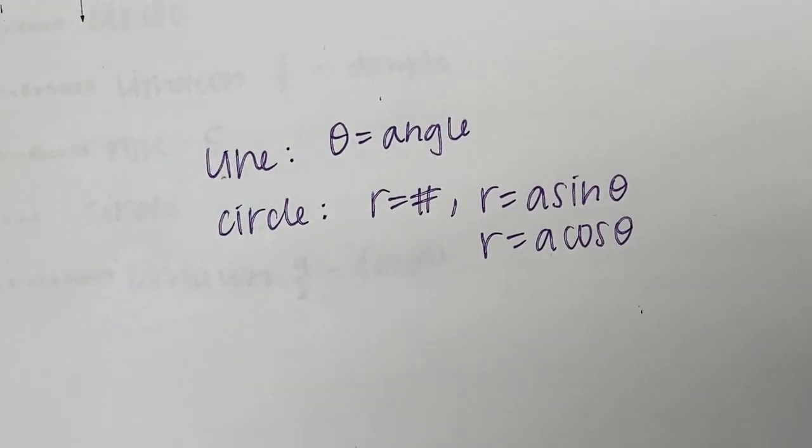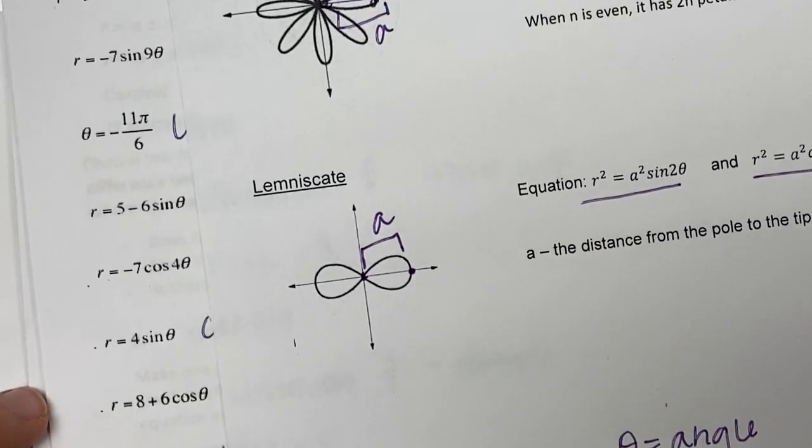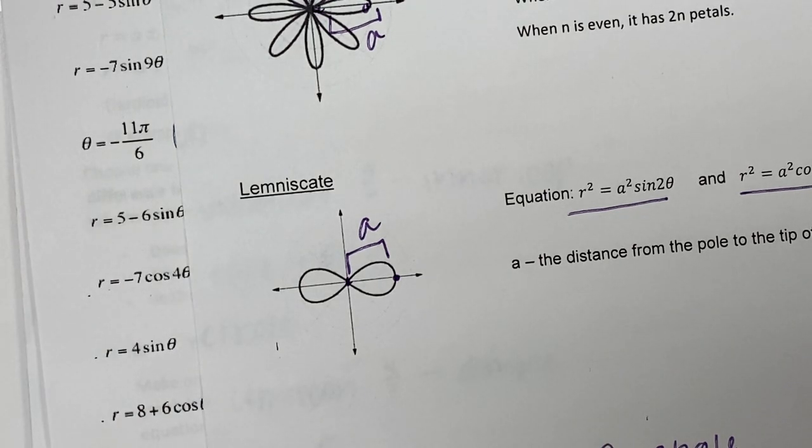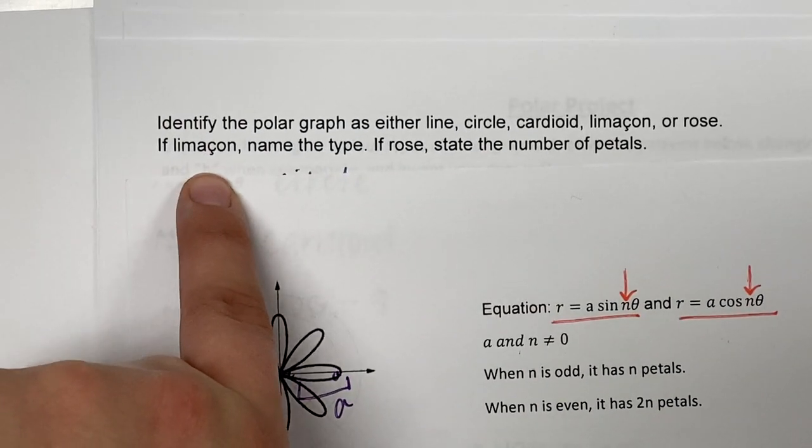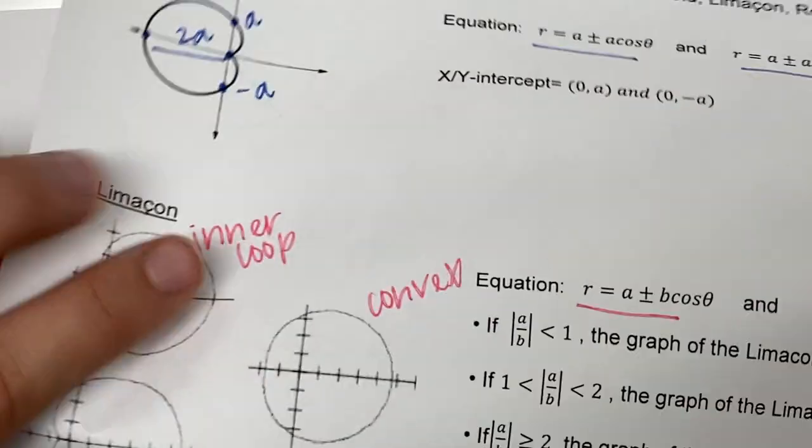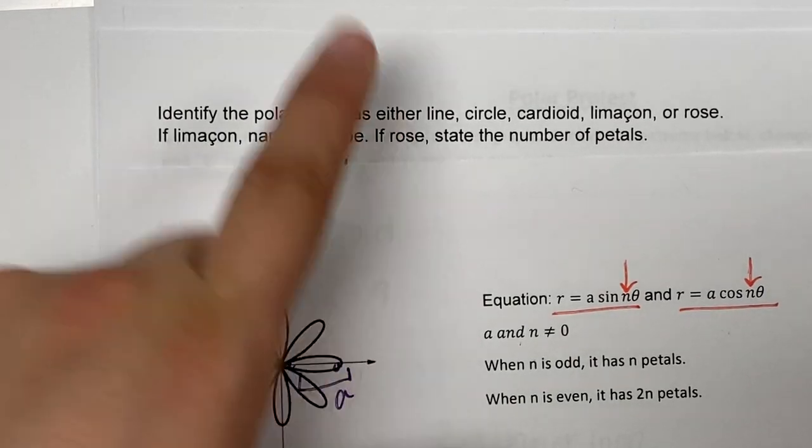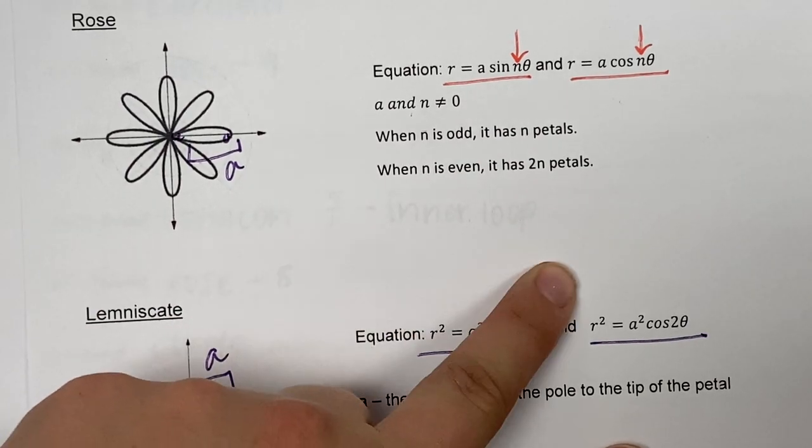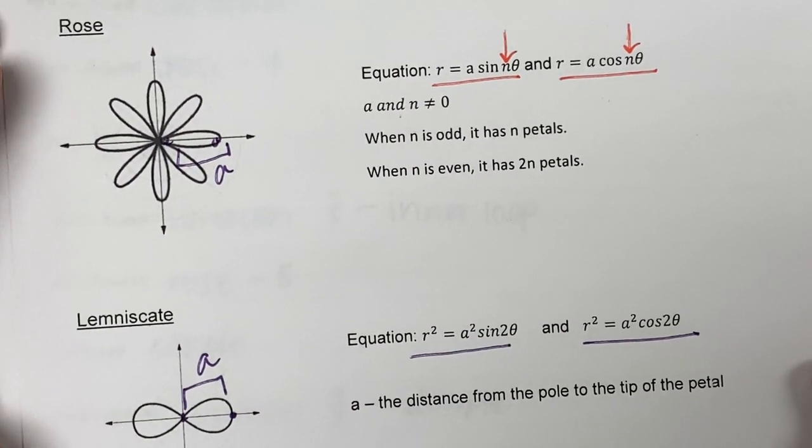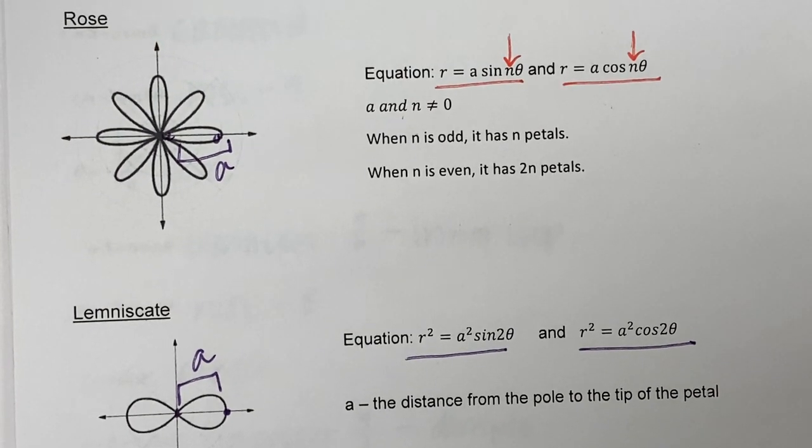Go ahead and turn the page. You're going to look at all those equations and label them—whether it's rose, lemniscate, limaçon, or cardioid. Read the instructions: if it's a limaçon, name the type by dividing a and b to determine if it's inner loop, convex, or dimple. If it's a rose, tell me the number of petals. If it's odd, it's that number; if it's even, you double it. Then you have a fun activity on Schoology for your homework grade. And then it's the project. Bye!